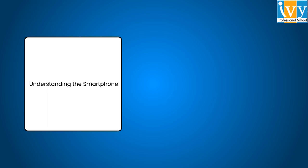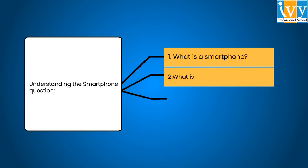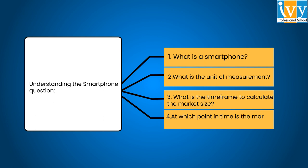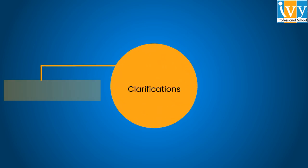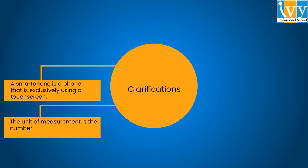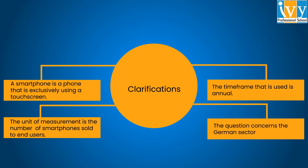If we go straight to the question of smartphones, there are four points that need to be clarified: what is a smartphone, what is the unit of measurement, what is the time frame to calculate the market size, and at which point in time is the market size calculated. For demonstration, suppose we get these clarifications: a smartphone is a phone exclusively using a touch screen; the unit of measurement is the number of smartphones sold to end users; the time frame is annual; and the question concerns the German market at present.